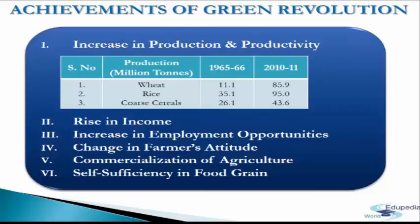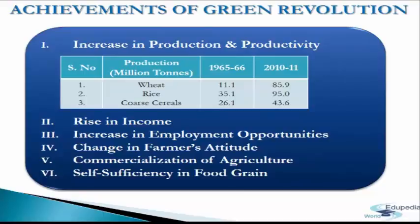The fourth achievement is the change in farmers' attitude. Qualitative changes in attitude can be observed from short and long-term investment decisions of farmers — such as increasing application of inputs like HYV seeds, fertilizers, pesticides, and investment in tube wells and pump sets for irrigation. Agricultural operations have increased in status from subsistence activity to commercial farming. The next point is the commercialization of agriculture.